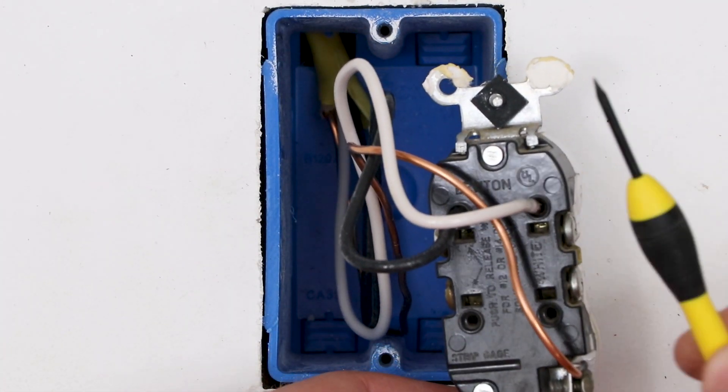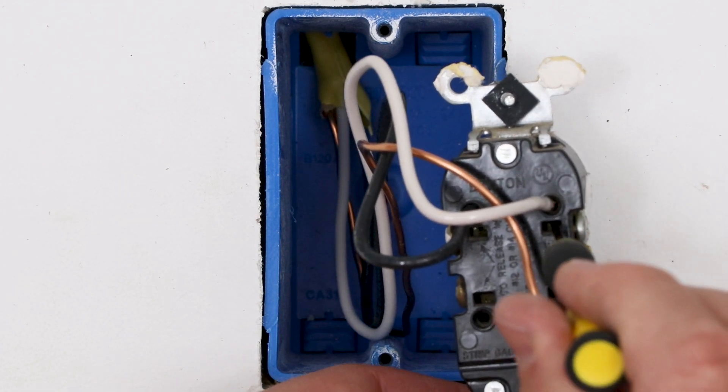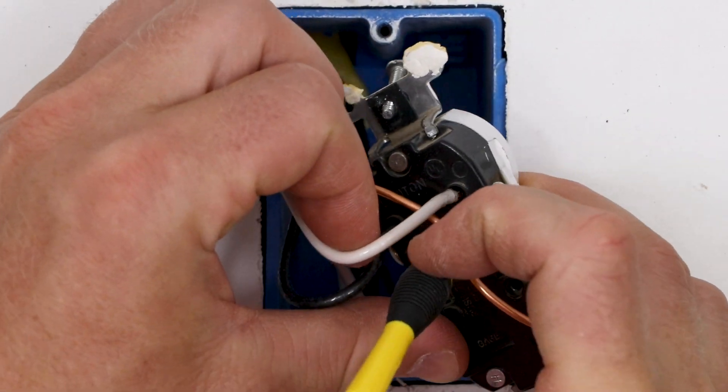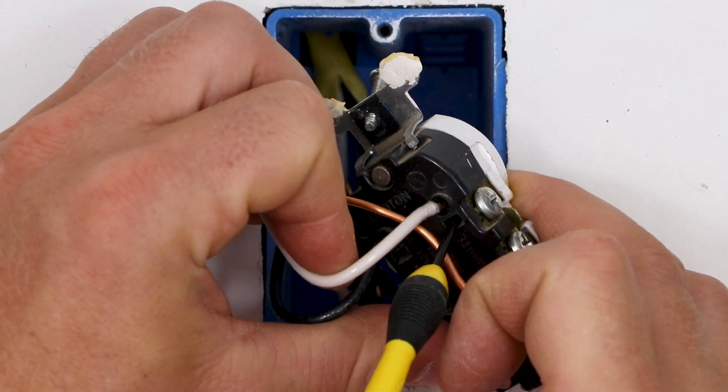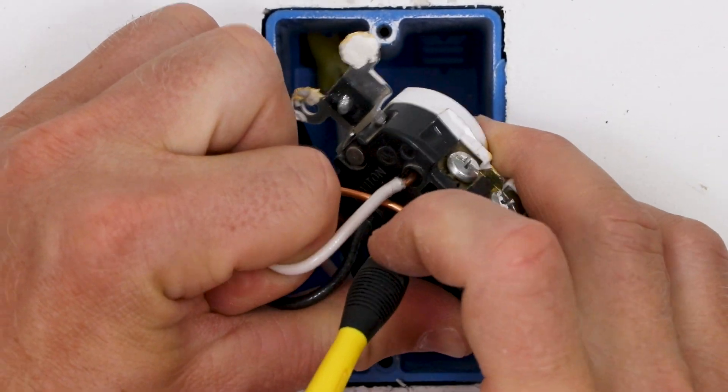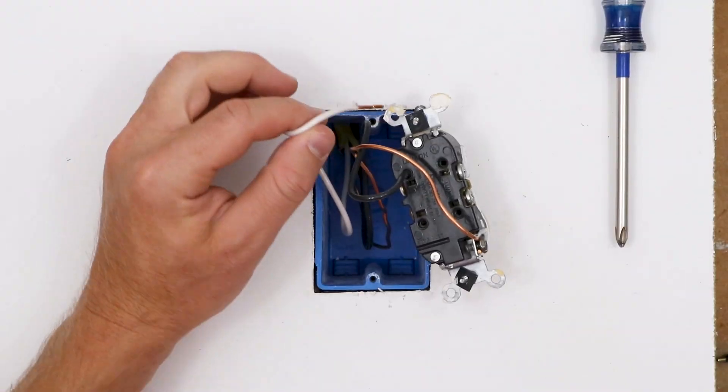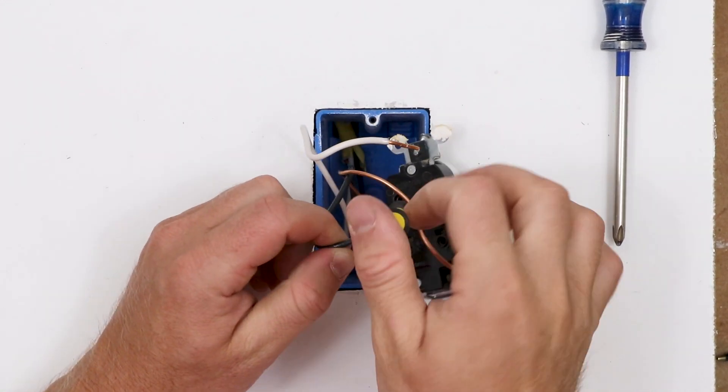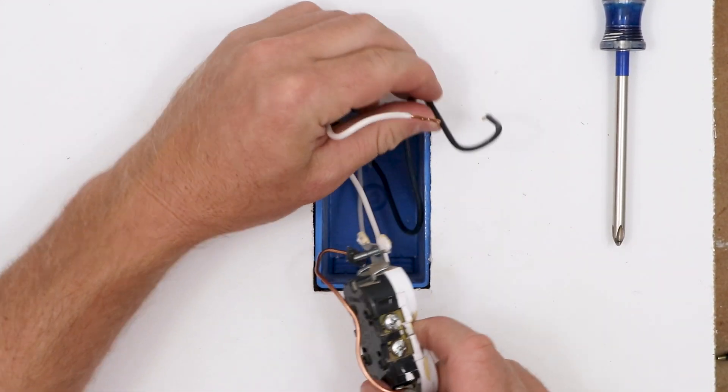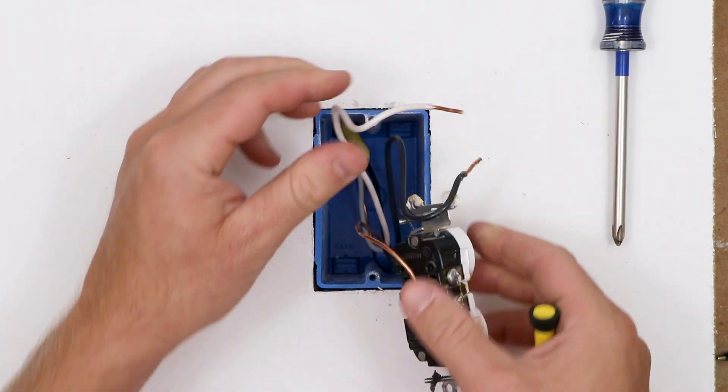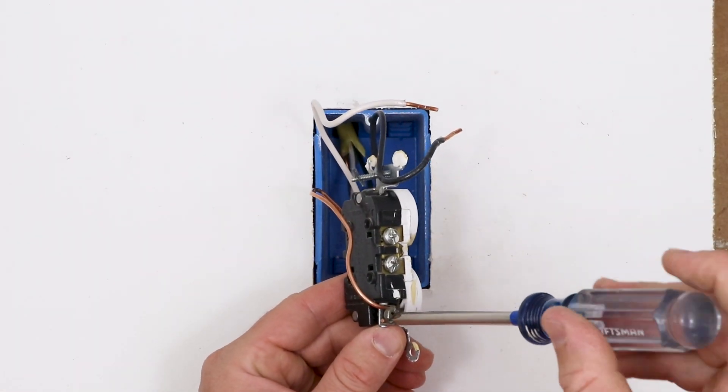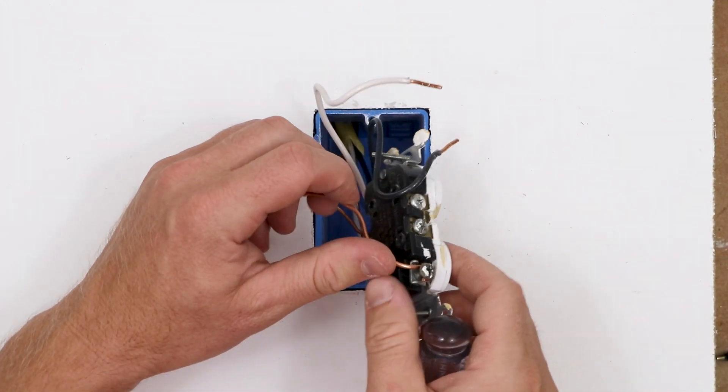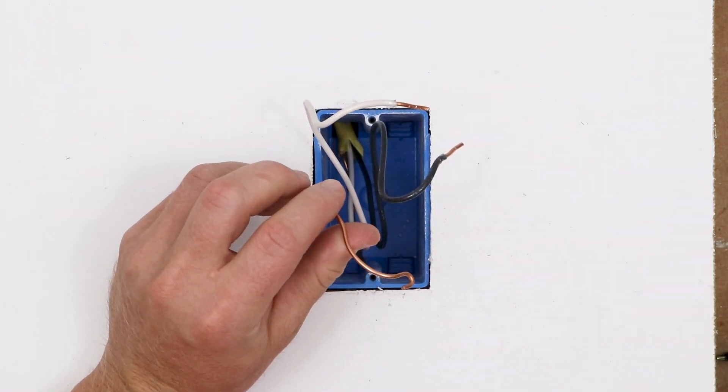In order to remove them, I'm going to use a small flathead screwdriver to push inside there. And while I'm pushing in there, I need to pull a little bit on this wire to see if I can pop it out. Sometimes they're a little tricky. And I got the neutral off. And there I got the hot off. And then lastly, I'm going to use my screwdriver to undo this terminal screw and get this bare copper wire, my ground off.